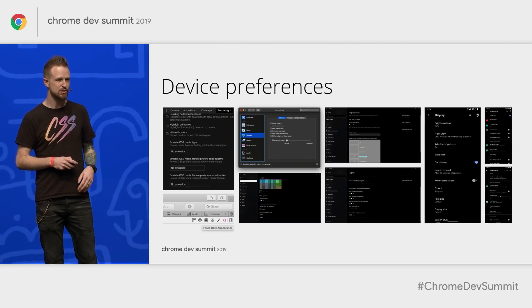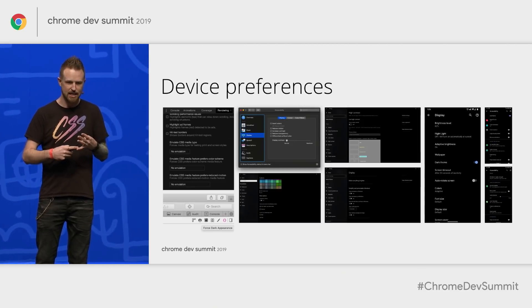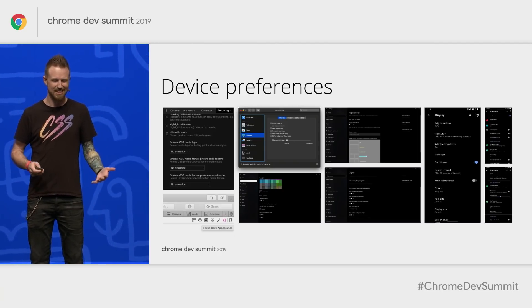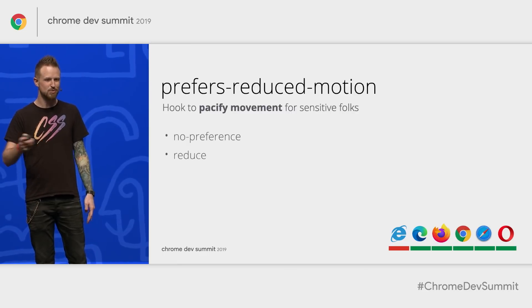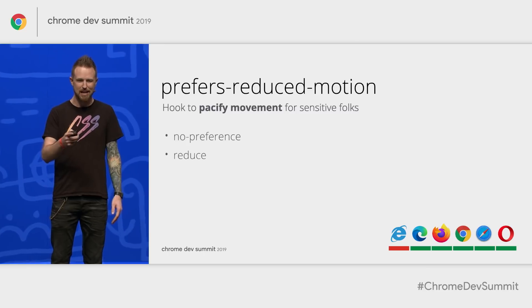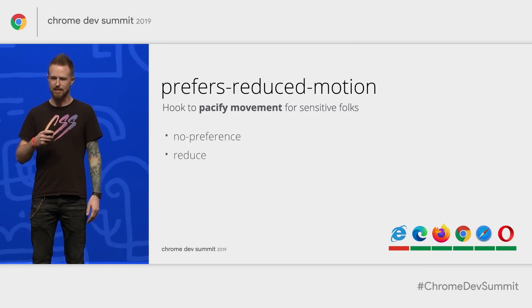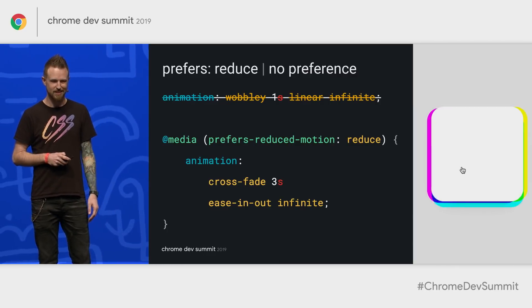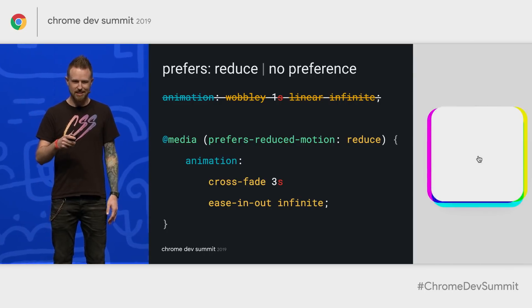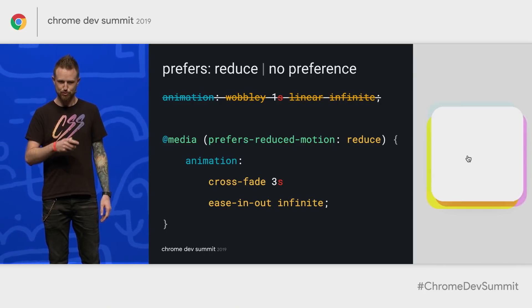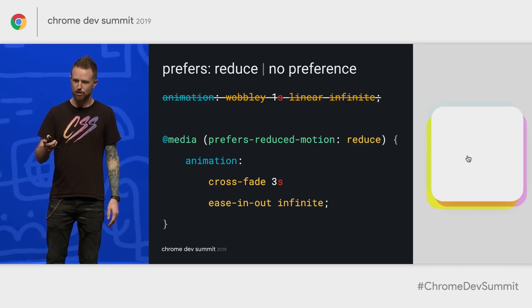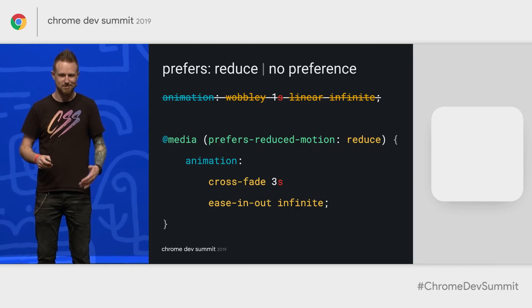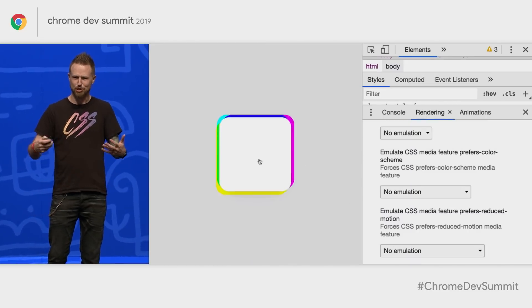Here's a quick overview of device preferences you might see on macOS, Windows, iOS, and Android. These get as cool as adjusting contrast, font size, and theme personalization. Our first one is prefers-reduced-motion — pretty popular, good support. It's a hook to pacify movement for folks who are sensitive to movement, with options of no-preference or reduce. We have an animation that's pretty wobbly with mixing of colors, but if the user prefers reduced, instead of removing the animation I crossfade. An important point: reduced motion does not mean no motion.